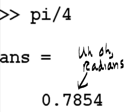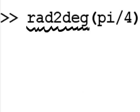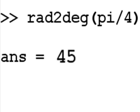Uh-oh, radians. How do I convert to degrees? This is how. Rad 2 degrees, radians 2 degrees function. I hand it pi divided by 4, and it gives me 45.